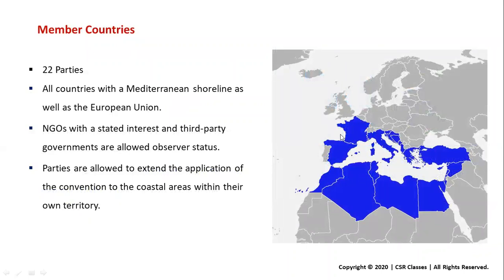There are 22 member countries. No need to remember the names, but know that India is not a part. The border countries of the Mediterranean Sea are members. Countries with a Mediterranean shoreline as well as the European Union are members — but not all EU countries, only those bordering the Mediterranean Sea. Intergovernmental organizations with a stated interest and third-party governments are allowed as observer status. Parties are allowed to extend the application of the convention to coastal areas within their own territory.